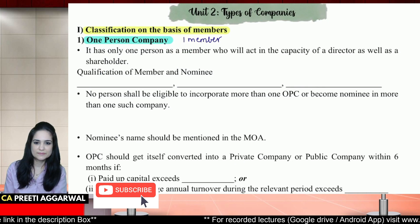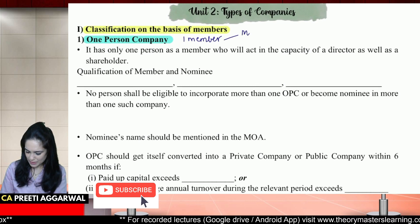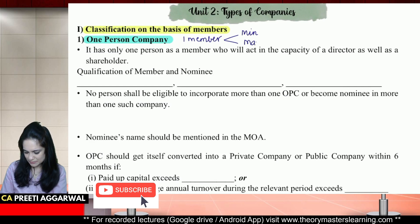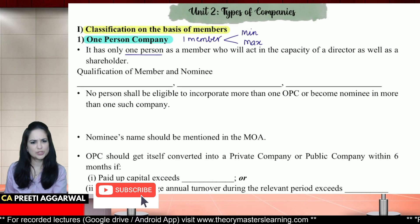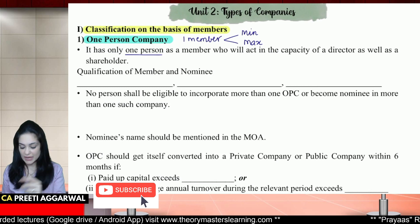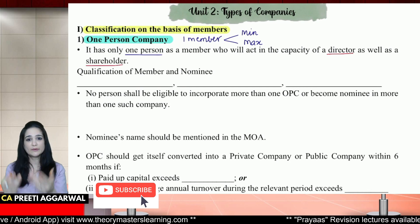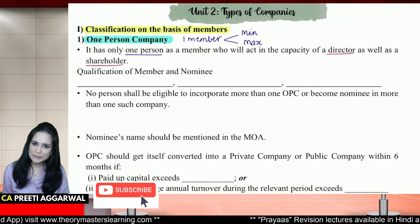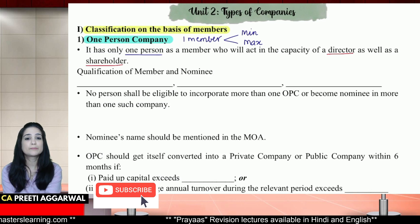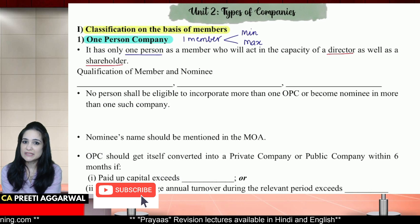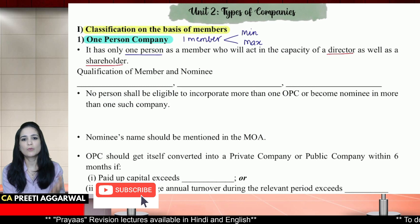In case of one person company, there is just one member — minimum as well as maximum is just one. So one member minimum, one maximum. It has only one person as its member. He will act in the capacity of director as well as shareholder. Why not start a proprietary business? Well, we want a very organized form of business — we want all the benefits of a company like perpetual succession, separate legal status, and limited liability. That is why these persons prefer a one person company.